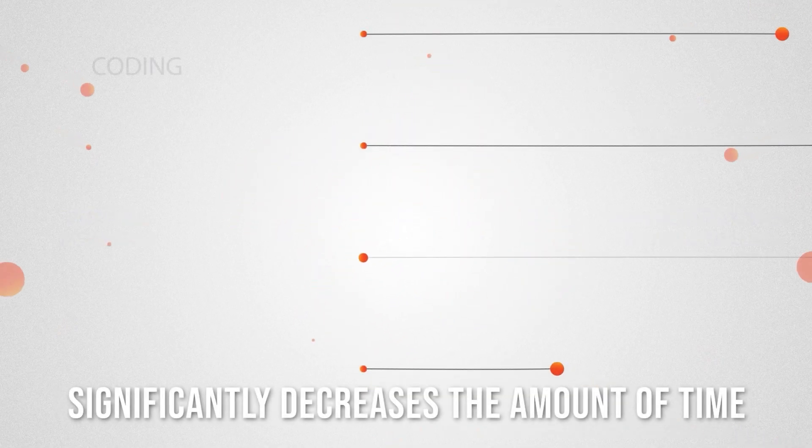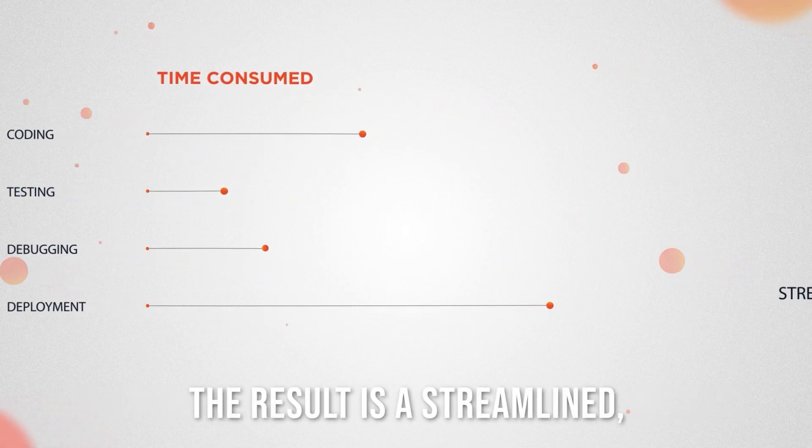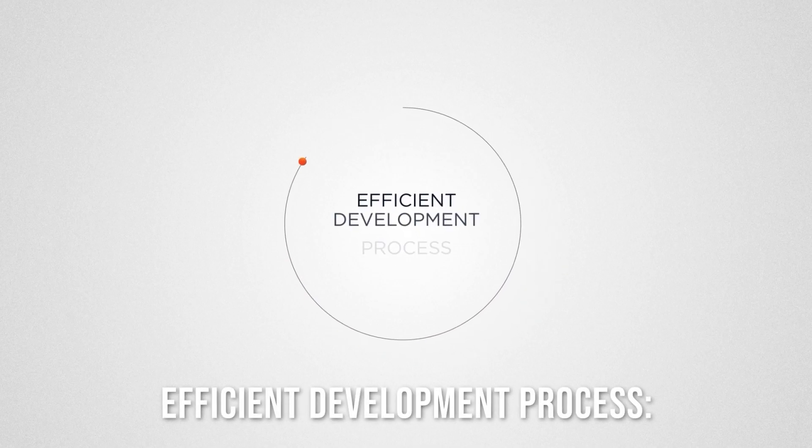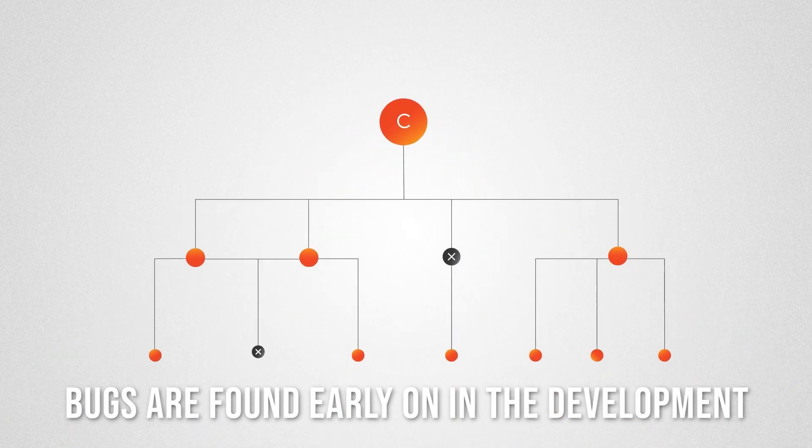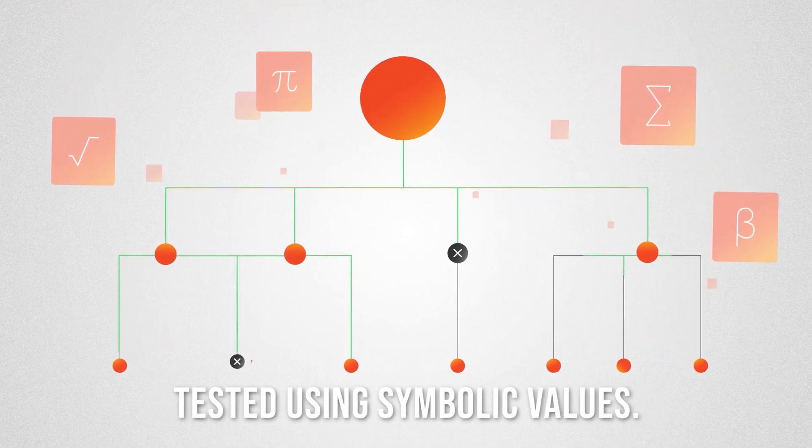Trust & Soft Analyzer significantly decreases the amount of time spent testing and debugging. The result is a streamlined, efficient development process. Bugs are found early on in the development cycle and all possible inputs are tested using symbolic values.